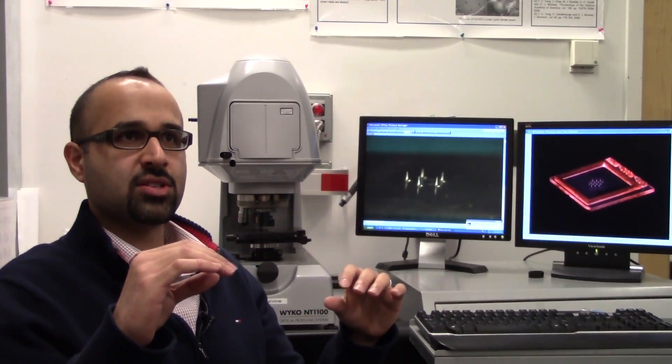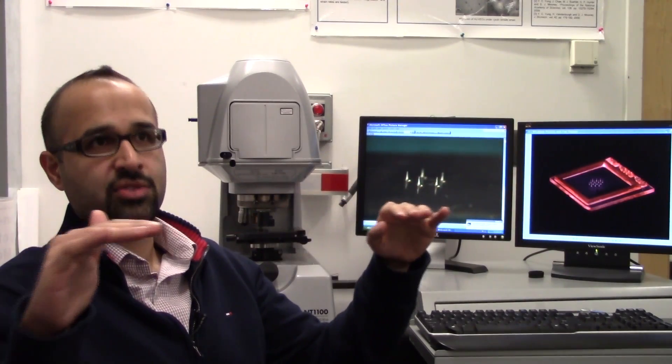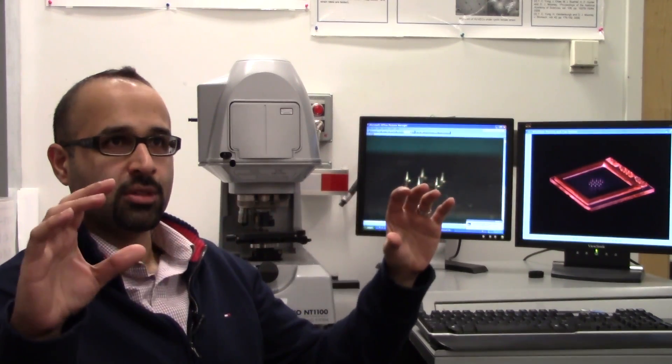In skin we have three layers. The outer layer is the protective layer of stratum corneum, then we have the viable epidermis, and then we have the dermis. All the blood vessels and the nerves are in the dermis.